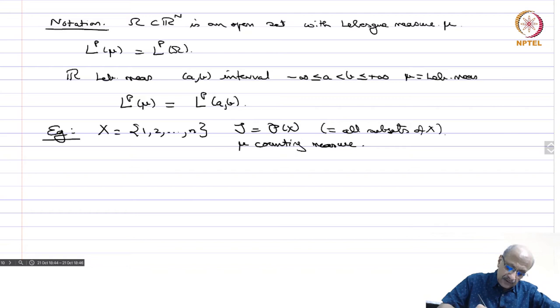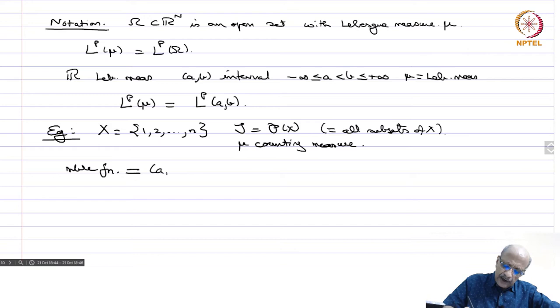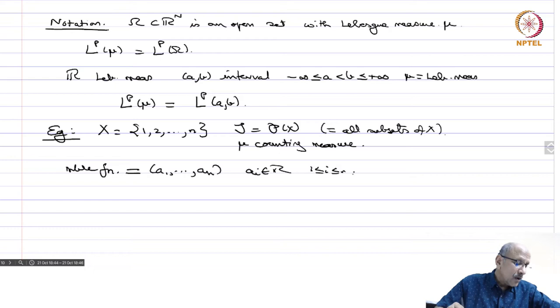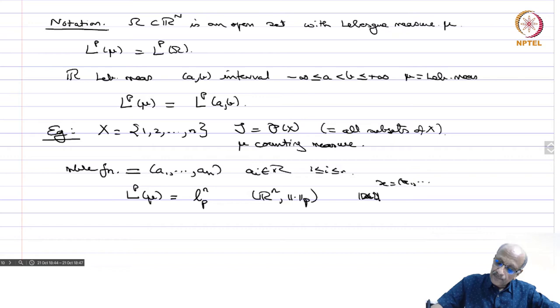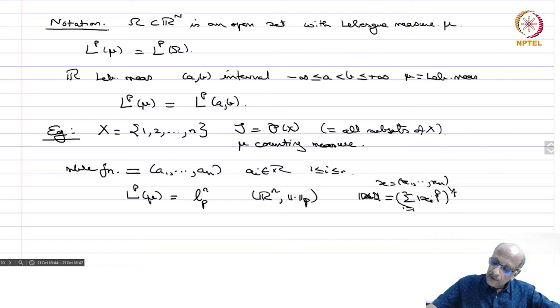Every function is measurable because we have taken all sets in the sigma algebra. A function is identified with the n-tuple (a₁, a₂, ..., aₙ) with aᵢ in R. Therefore, in this case Lp(μ) is nothing but our familiar ℓⁿp, namely Rⁿ with the norm defined as ‖x‖p = (Σ|xᵢ|^p)^(1/p) for i = 1 to n.